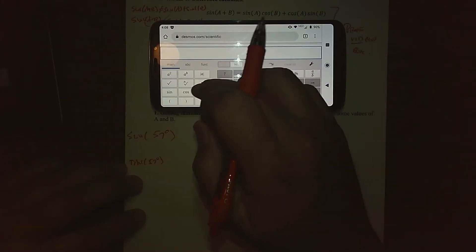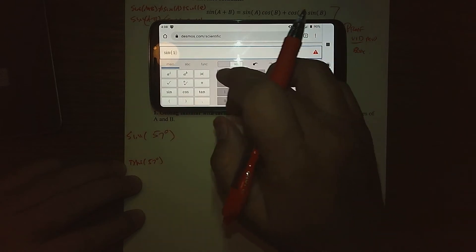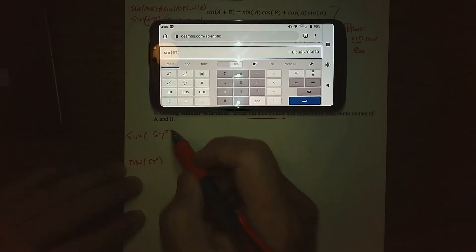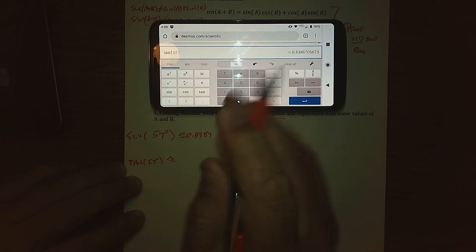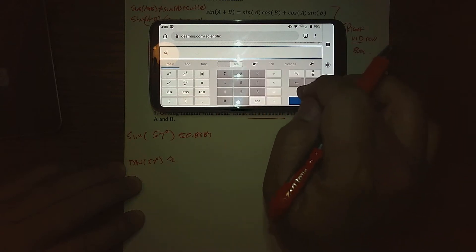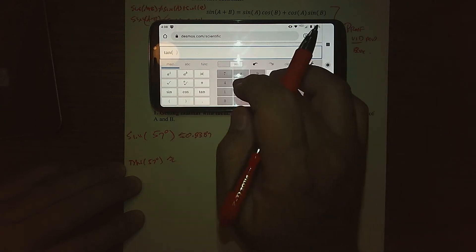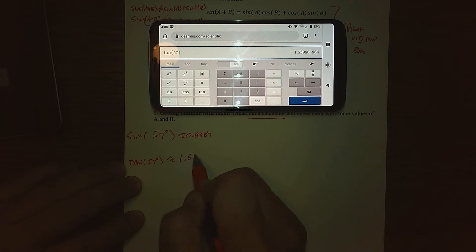Let me bring it up to here. Make sure I'm in degree mode, the sine of 57 is about 0.8387 if we round off to four decimals. The tangent of 57 is roughly about 1.5399 if we round off to four decimals. So we've established what the sine of 57 and the tangent of 57 is.